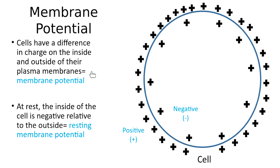Looking at this diagram, I've tried to represent this — there are positive charges on the outside of the cell, and many fewer on the inside of the cell. That's what this difference in charge means. We've got ions that are positively charged, and there's a difference in the amount on the two sides of the membrane — this is the membrane potential.